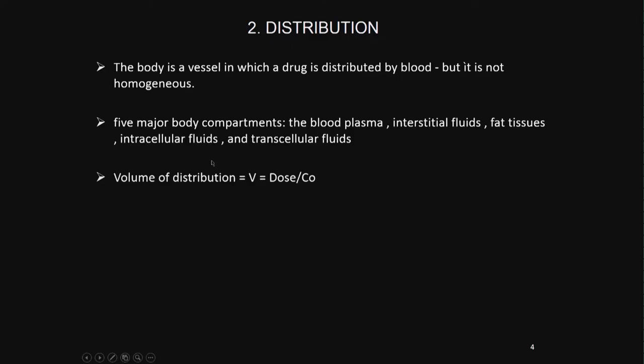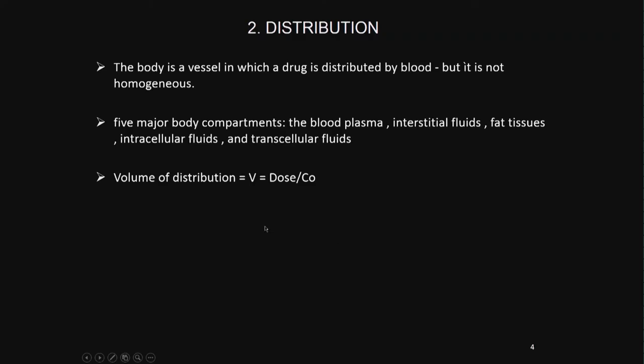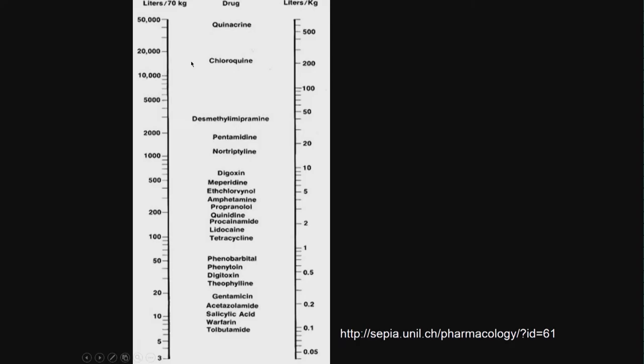The equation is: volume equals dose divided by C0, where dose is the amount of drug given. Volume and maximum concentration are inversely related. Depending upon the type of drug and many parameters, the volume of distribution can change. For example, warfarin has a very low volume of distribution, whereas chloroquine, which is anti-malarial, has a very high volume of distribution. As the volume of distribution becomes higher and higher, concentration keeps going down.